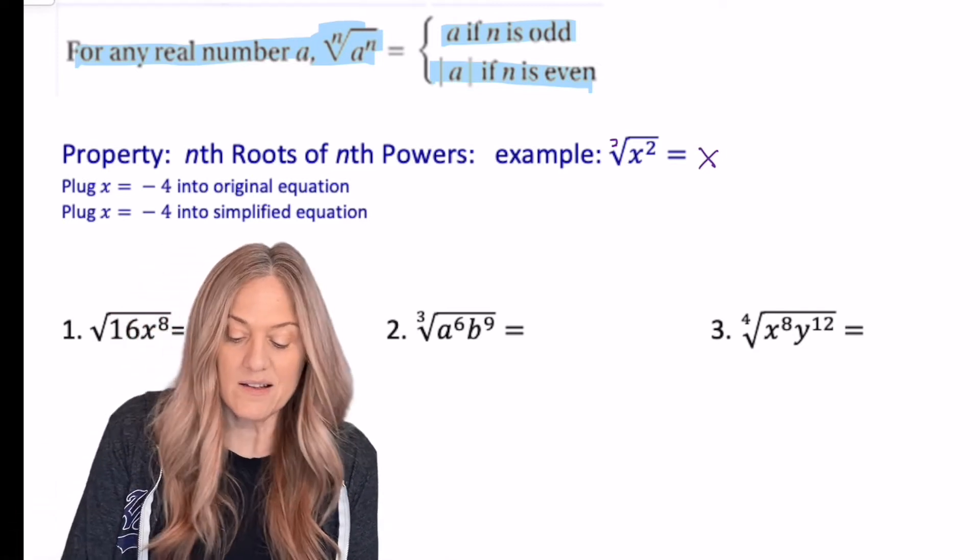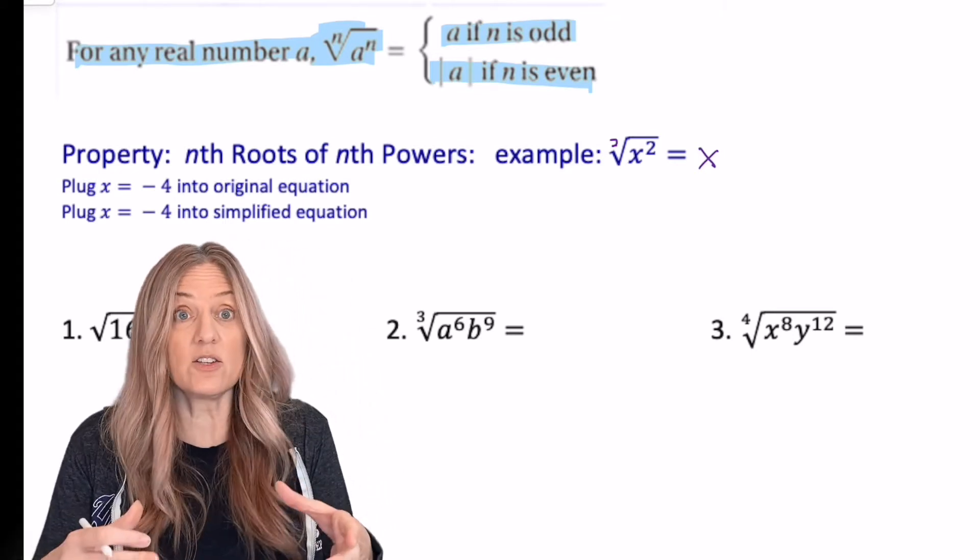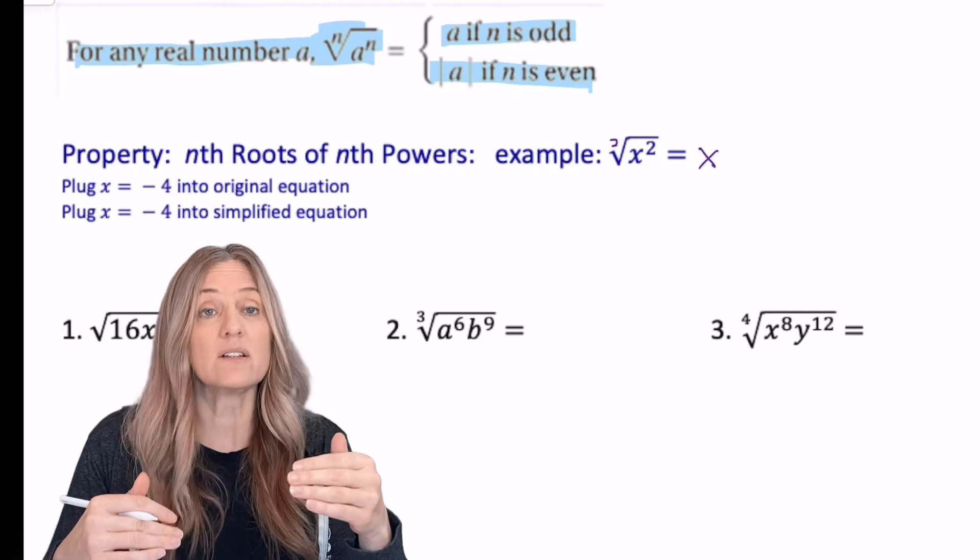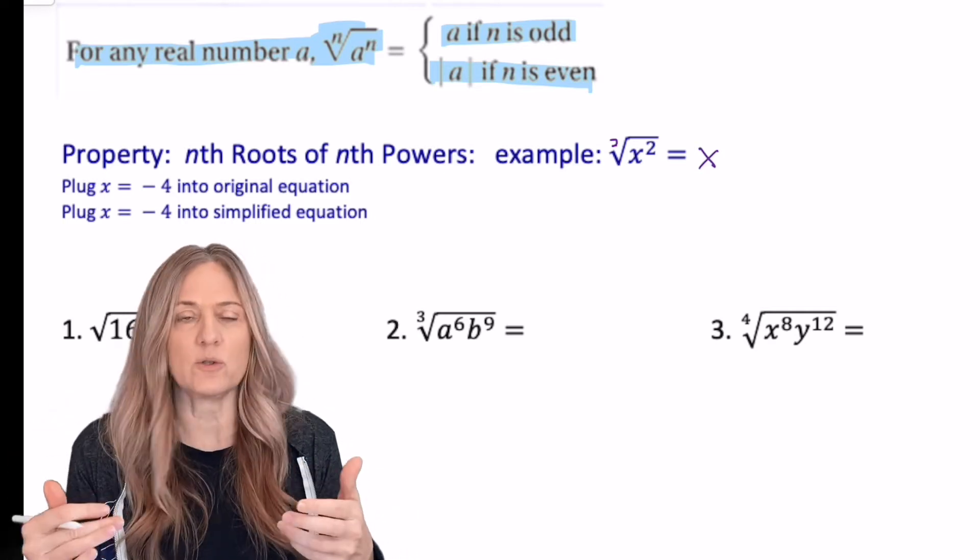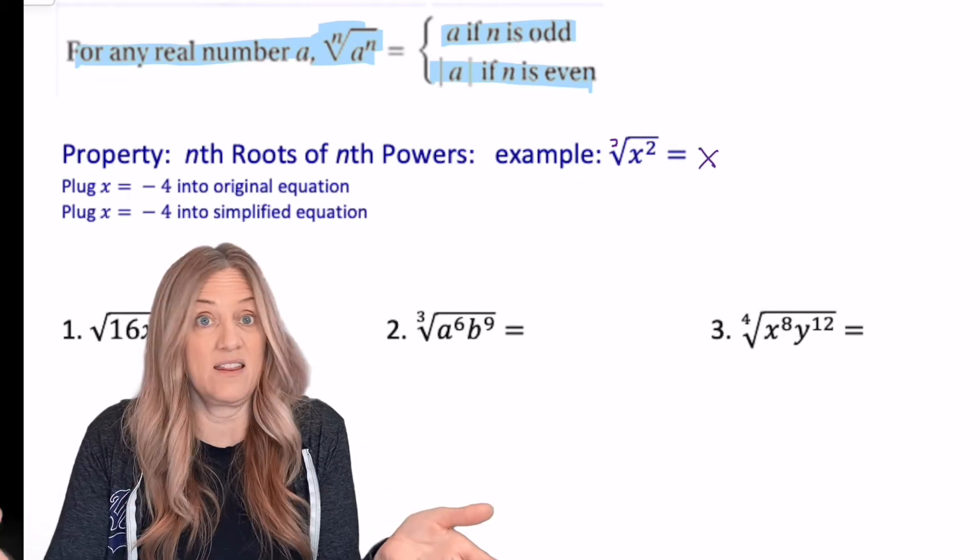Well, let's try that. What happens if I plug in negative four for x into this equivalent statement? I have said the square root of x squared is x. So it should be that all I have to do is plug in the same value for x and they should still be equal. Well, let's see if they are.